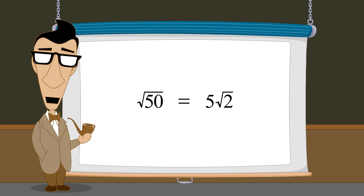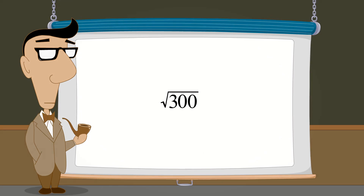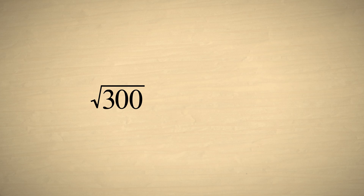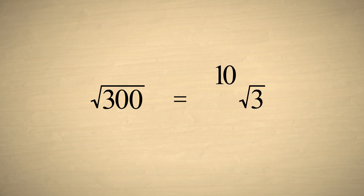Let's try another example, simplifying the square root of 300. In other words, let's write this expression with the smallest possible number under the radical sign. We can factor 300 as 3 times 100. Then each factor can be written separately under its own radical sign. Since the square root of 100 is 10, the square root of 300 can be written as 10 times the square root of 3.